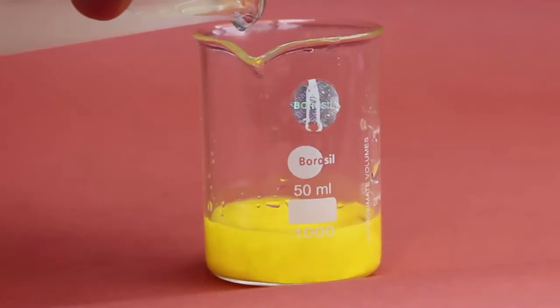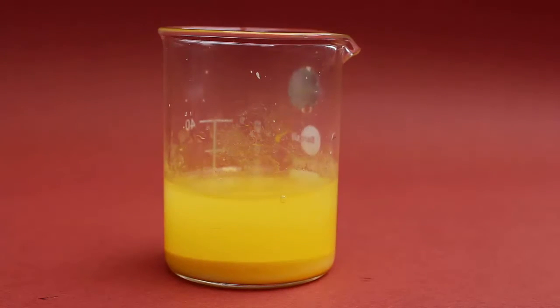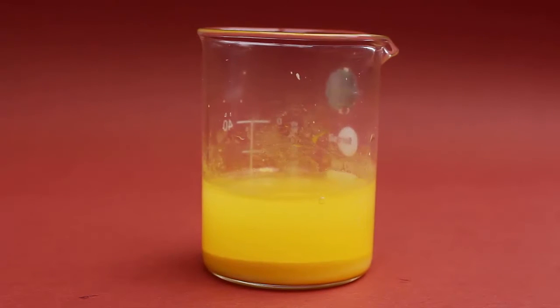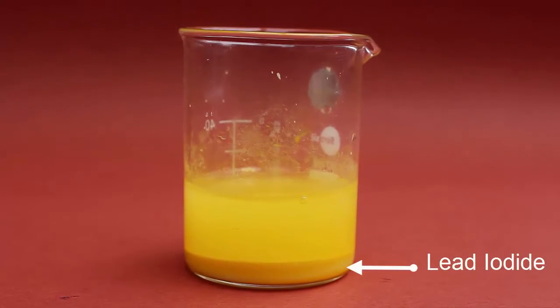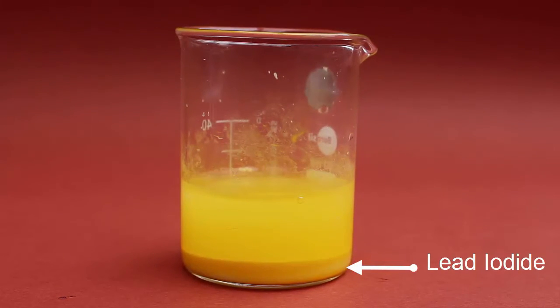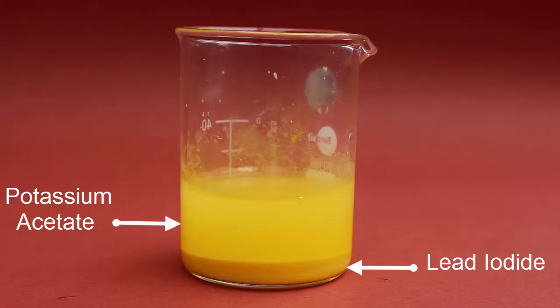Beautiful yellow color precipitate is forming. Now we can see two distinct layers here. The lower one is the precipitate of lead iodide, which is yellow in color. The upper one is the solution which contains potassium acetate.